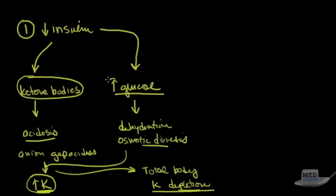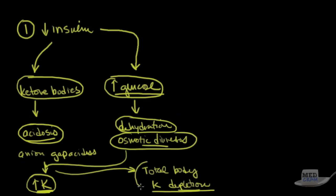So what have we seen here? We've seen ketone bodies, we've seen hyperglycemia, we've seen acidosis, we've seen dehydration, we've seen osmotic diuresis, and we've seen total body potassium depletion. And along that you can also put total body phosphate depletion as well. Now the dehydration can lead to increased creatinine because of renal failure.